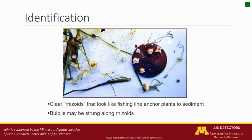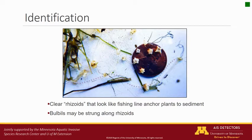Clear cells called rhizoids shallowly anchor starry stonewort to lake bottoms. These look like fishing line and may have bulbils strung along them. Here, three of these rhizoids are highlighted so that you can see them more clearly.